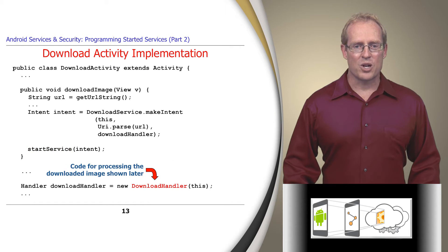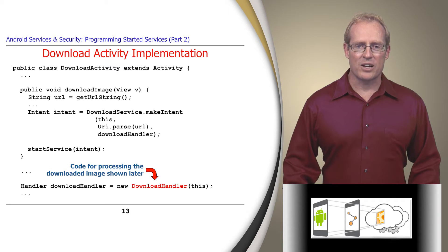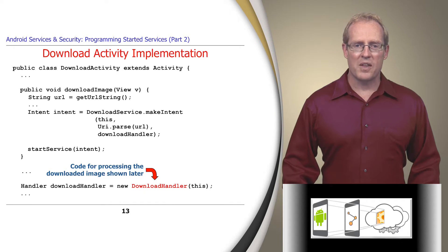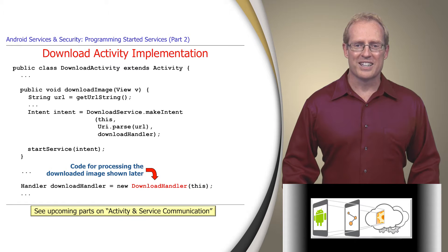After the service has successfully downloaded the image and stored it in a file on the device, the path name is passed back to the download activity via its download handler, which is encapsulated by the Android Messenger interprocess communication mechanism, which we'll discuss in a later video.